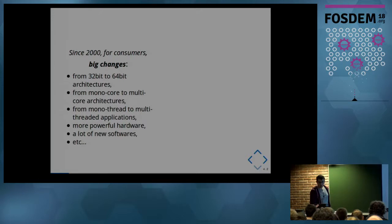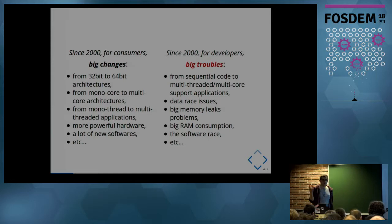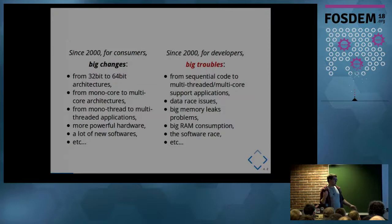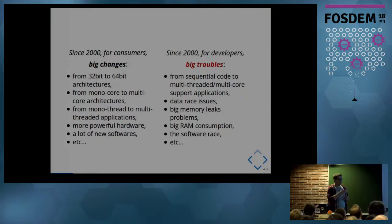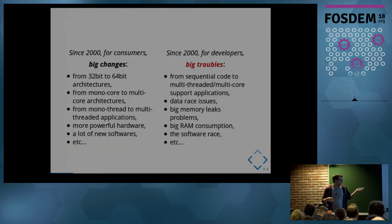All this competition and those big changes are really big troubles for developers, because we have to switch from sequential code to multi-threaded and multi-core support applications. That introduced data race issues and big memory leak problems. And with this competition, we have to build software with a lot of features that we don't test enough, introducing those big problems.